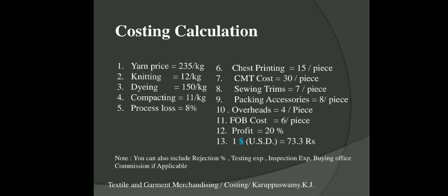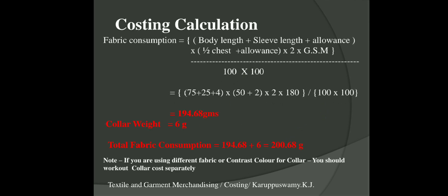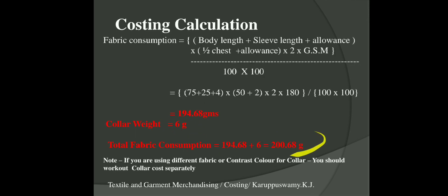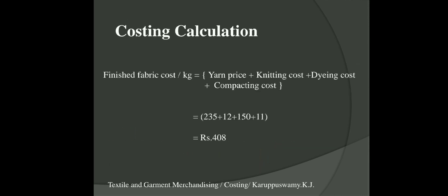The first step in garment costing is to identify the various expenses incurred to manufacture a garment. The second step is to calculate the fabric consumption. For more understanding on fabric consumption calculation, click the link in the description box. Based on these measurements, the fabric consumption for one piece is 194 grams; adding collar weight, the total fabric consumption becomes 200 grams.